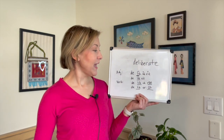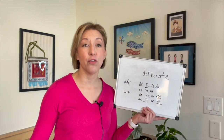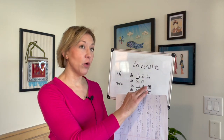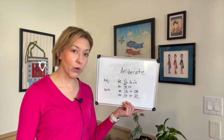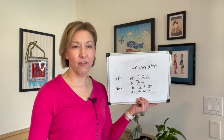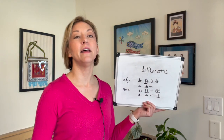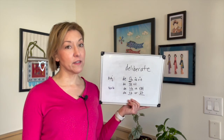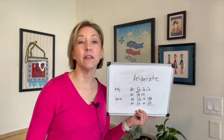To say the adjective 'deliberate,' you have two choices. I actually say three syllables: de-lib-rate. But you can also say four syllables: de-lib-er-ate. The key is that we stress the 'lib' syllable — syllable number two. So: deliberate, deliberate, deliberate.